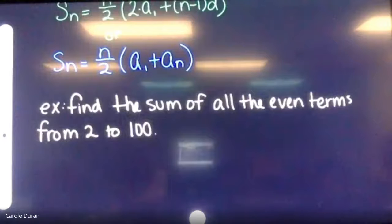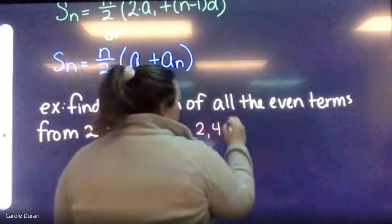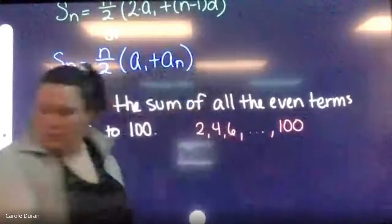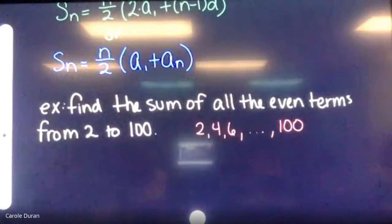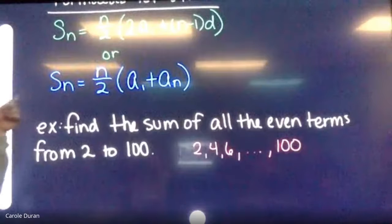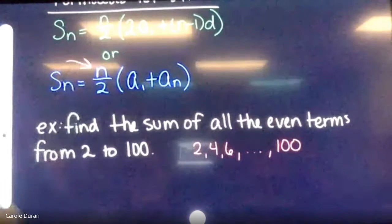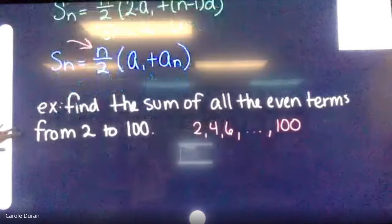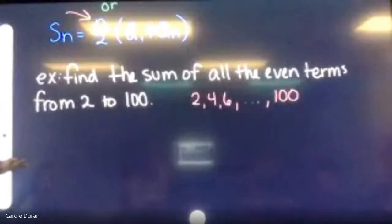The example asks us to find the sum of all even terms from two to 100. I'll use the second S(n) formula since I don't need to find the common difference. The hardest part is figuring out how many terms — going from 2 to 100 by evens gives 50 terms, so n equals 50.